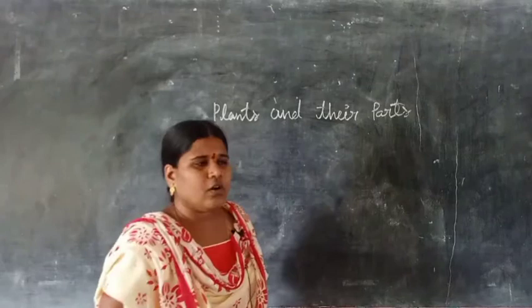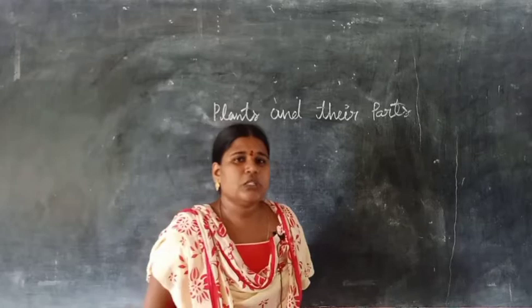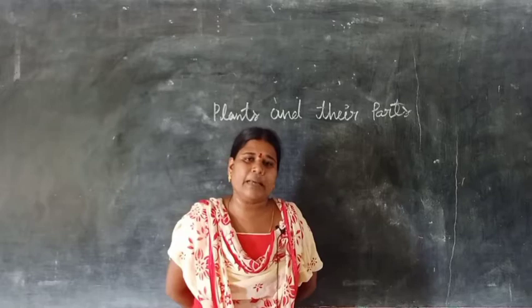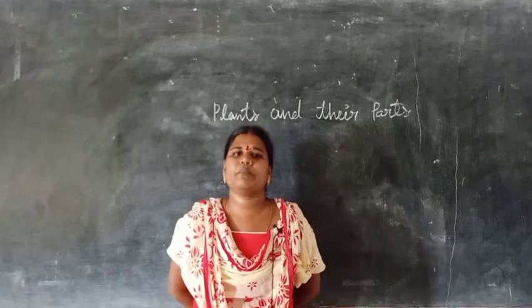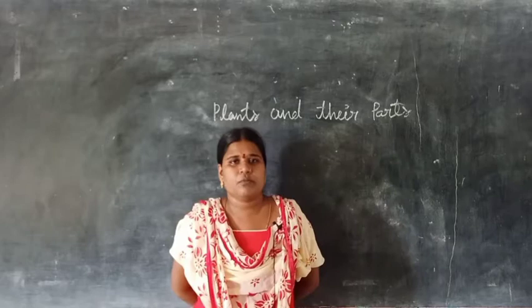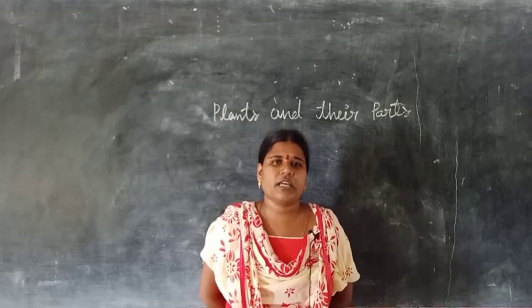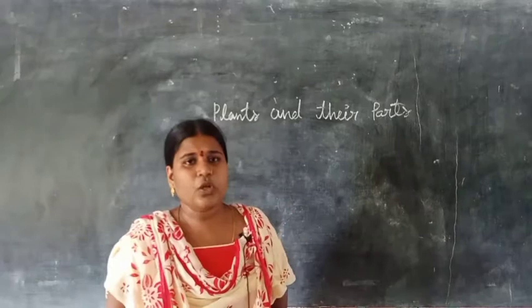Do all plants look the same? No, plants are different from one another. So how can we identify plants? All plants have different flowers, different leaves, and different stems, and they also have different fruits. So we can identify which plant is which by their flower, fruit, leaf, and stem.